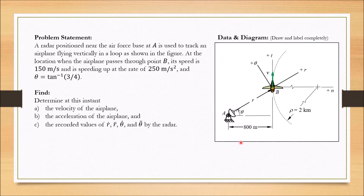This is the schematic diagram. We have an airplane flying vertically following a curvilinear path. The aircraft has normal and tangential coordinates. The aircraft is tracked by a radar on the ground. When the aircraft is at point B, the radar detects the aircraft with an angle of theta, with a horizontal distance of 800 meters.